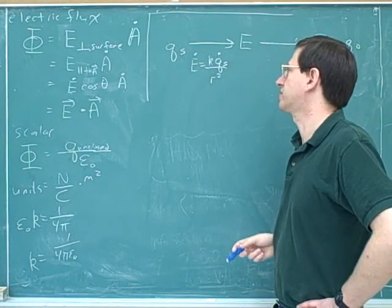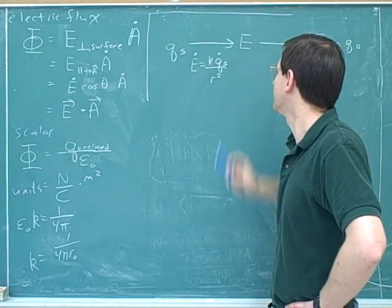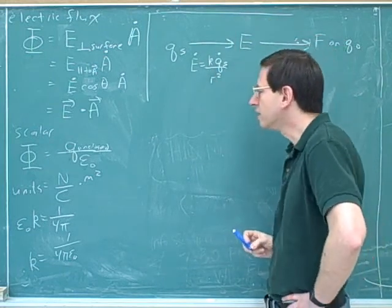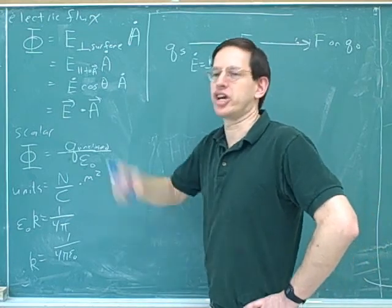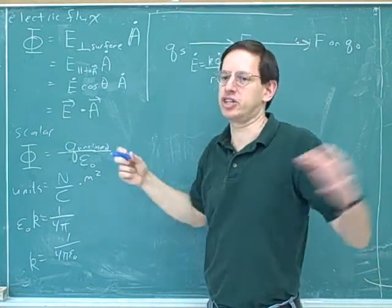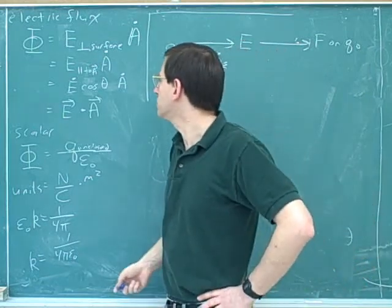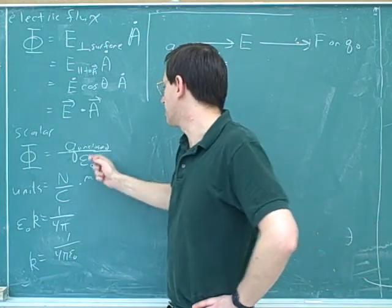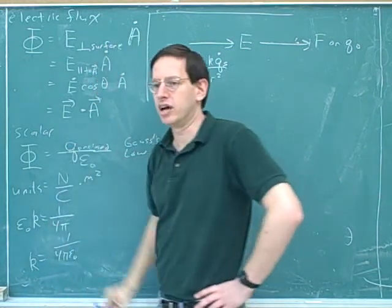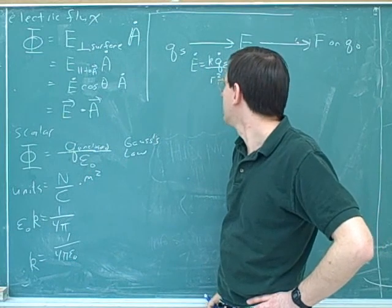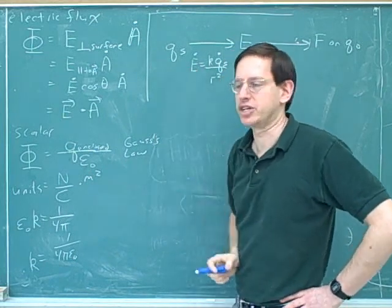Up on the flowchart I put how to find the directions; this formula just gives us the magnitude. It's not really satisfying to only work with point charges — we'd like to work with more interesting shapes like spheres or lines. It turns out we can use Gauss's law to figure out the electric field for more interesting conformations.